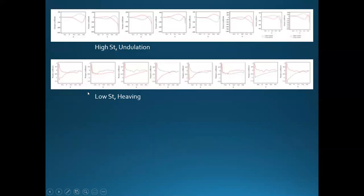Looking at the pressure coefficient for undulation versus heaving: for undulation you can see that the force and pressure move down the body through one tail beat — the pressure bubble starts at the front, gets pushed out the back as a new pressure bubble forms, and the process continues. For heaving, it's more just these lines crossing over straight, not traveling down the body — the pressure just goes from high on one side to low pressure on the other.